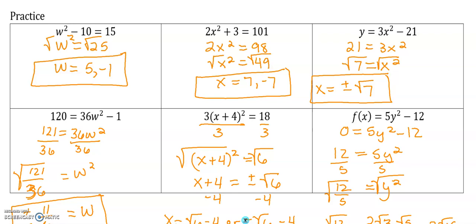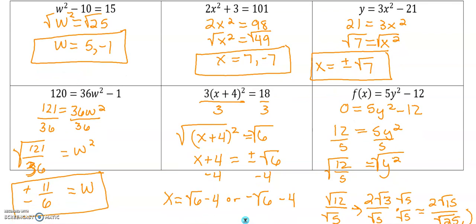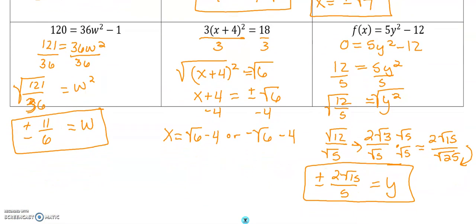As we move on to that bottom row, we had a little bit more to do on that bottom row. Add 1 to both sides. We'll get 121 over 36. When we divide by 36, then we have to take the square root.